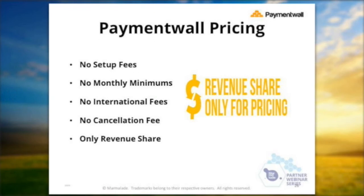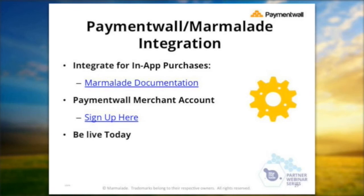For Payment Wall pricing, we operate on a simple revenue share, which is beneficial if you're a smaller to medium developer without huge capital to invest upfront. Since Payment Wall typically works with smaller developers, we give a growth period of six months when you start, with a lower rate of around 3–5%. For integration, it can be found on the Marmalade documentation page, and you'll set up a Payment Wall merchant account — make sure you sign up through the Marmalade link to ensure the rates and plugin are set up correctly. We can usually have merchants live the same day they sign up. It's very quick and easy, and we operate across all seven global offices, so there will always be someone to answer your questions.